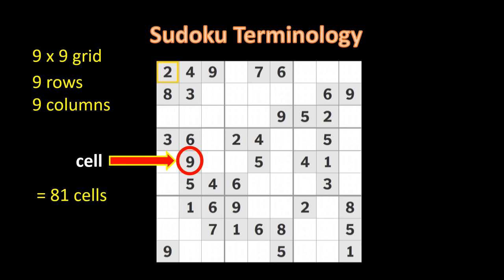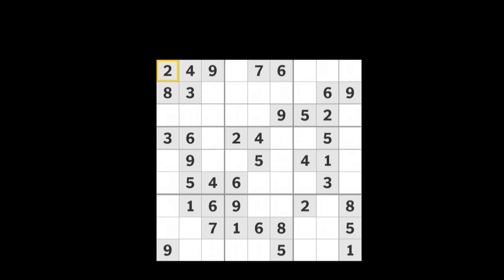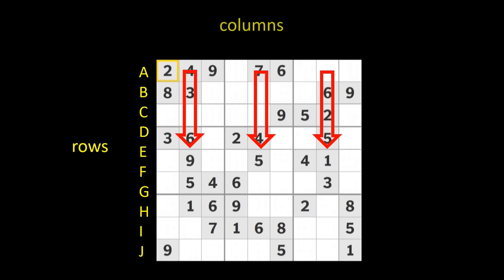When we look at a nine by nine grid with 81 cells, we need a way to refer to each cell's location. We do this by using the rows and columns as cell references. Let's refer to the rows by using the letters A through J, and let's refer to the columns by using the numbers one through nine.